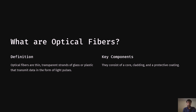What are optical fibers? Optical fibers are thin, transparent strands of glass or plastic that transmit data in the form of light pulses. Optical fiber consists of a core, cladding, and protective coating.